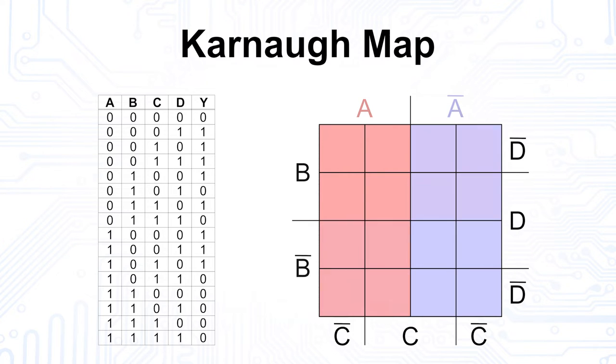Next, we select the upper two rows for the variable b and the lower ones again for b dash. We continue with the middle two columns representing the variable c, while the outer two represent c dash. And last but not least, we select the middle two rows for d and the upper and lower ones for d dash.